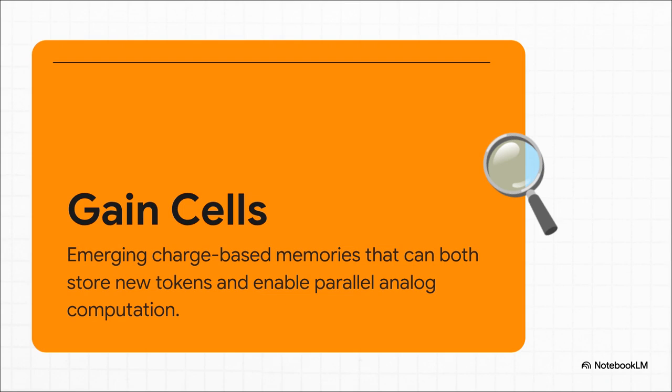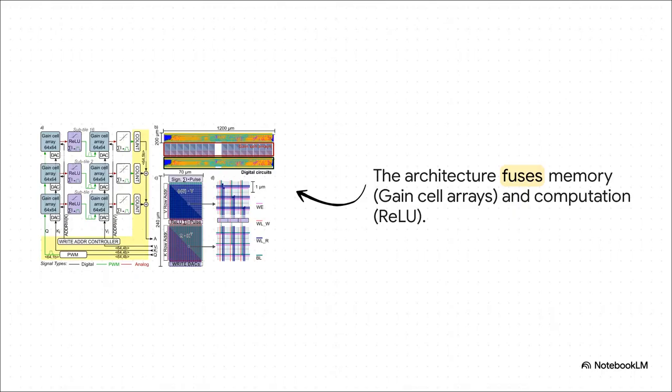And the magic piece of technology that makes this possible is called a gain cell. It's this incredibly elegant little device. It uses stored electrical charge to hold a value, just like normal memory. But, and here's the genius part, it can also use that same charge to perform a multiplication, like a processor. It's a memory cell and a calculator all rolled into one. Let's actually look at the chip architecture here. You can see these sections labeled gain cell arrays. That's our memory, the refrigerator. And notice how they're physically fused right next to the computation blocks, like the part labeled Relu. Everything is integrated together in these subtiles. By putting the work right next to the data, our chef basically never has to take a step.